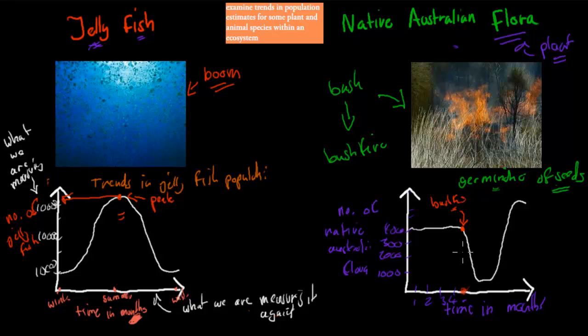But then their offspring, the seeds, had the opportunity to germinate. So after a while, once they've germinated, the numbers would actually increase even beyond what they were beforehand. So this is after germination. So this is quite a normal pattern for many of Australian flora, such as eucalyptus trees and such. They need to have bushfires to actually be able to reproduce properly.